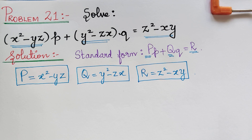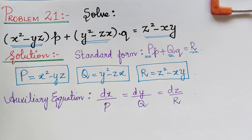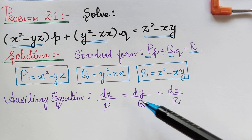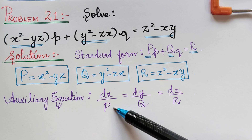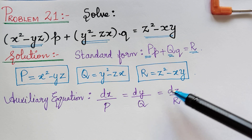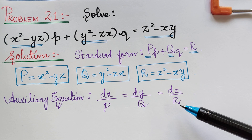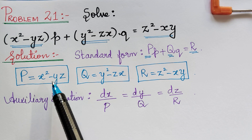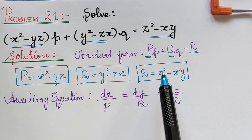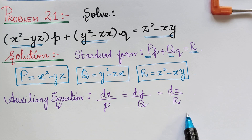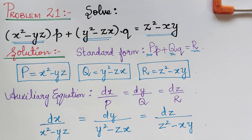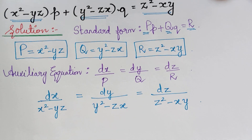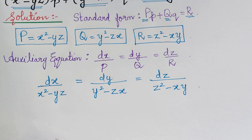After this, we have to write the auxiliary equation of the Lagrange's form. The auxiliary equation is given by dx over capital P equals dy over capital Q equals dz over capital R. We shall now substitute the values of P, Q, and R in this auxiliary equation.